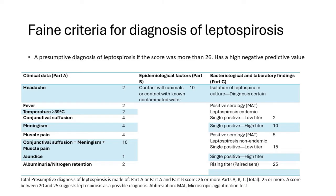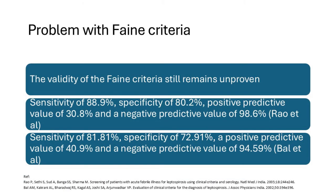The Faine clinical criteria include headache, fever, conjunctival suffusion, meningismus, muscle pain, and albuminuria. Epidemiological criteria include contact with animals or contaminated water. Laboratory findings are based on culture or MAT. A score of more than 26 from parts A and B, or 25 or more across all three parts, was required for diagnosis. However, the Faine criteria's validity is unproven: specificity is 80.2%, positive predictive value only 30.8%, but negative predictive value is 98% — so it rules out leptospirosis but cannot confirm it.